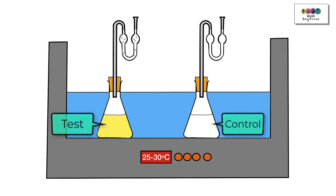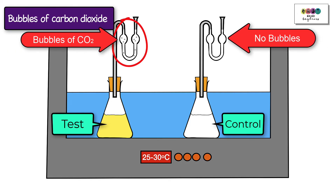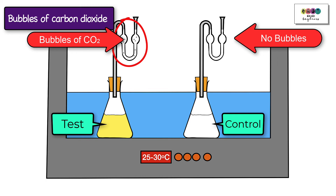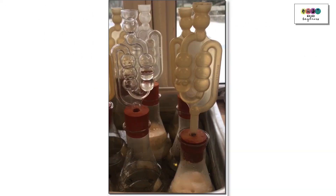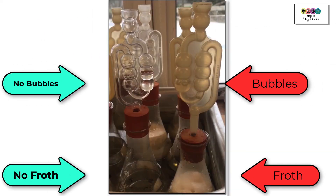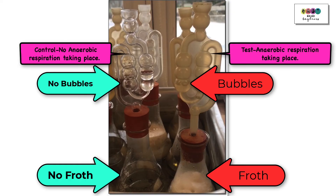After a short period of time, if you look at the test apparatus's fermentation lock, you'll soon be able to see bubbles of carbon dioxide and the lime water turns milky. On the right is the test and on the left is the control. You can see bubbles of CO₂ in the fermentation lock and froth on the right, whereas on the left there are no bubbles of CO₂ and no froth.